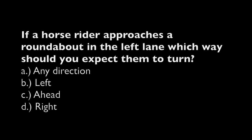If a horse rider approaches a roundabout in the left lane, which way should you expect them to turn? A. Any direction. B. Left. C. Ahead. D. Right.